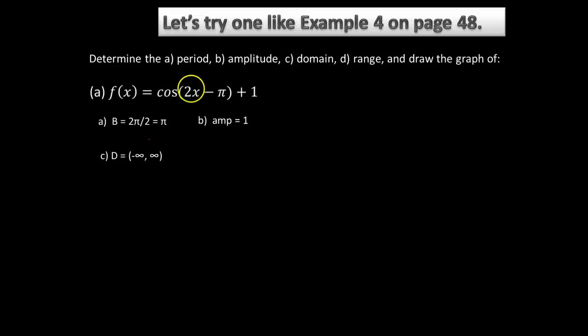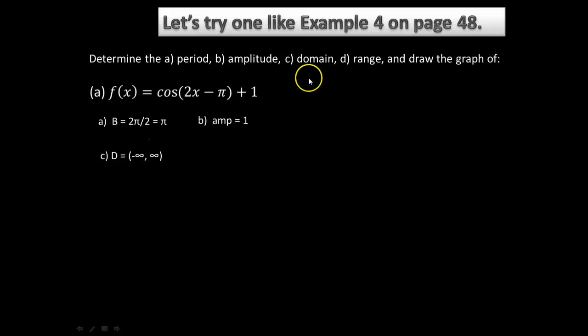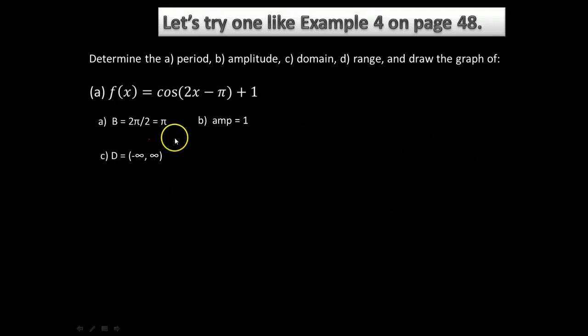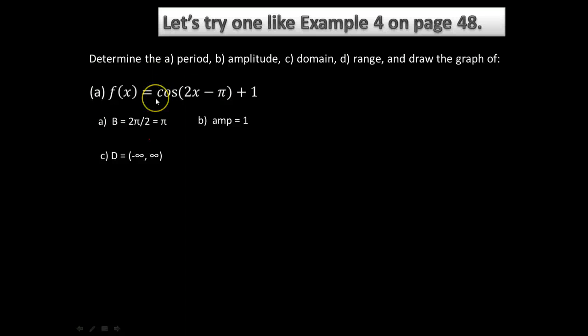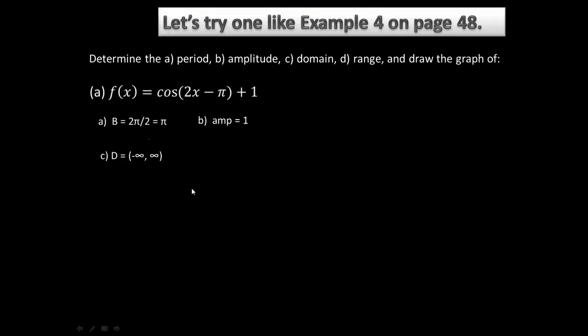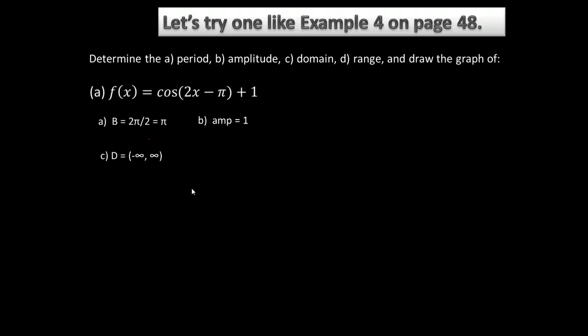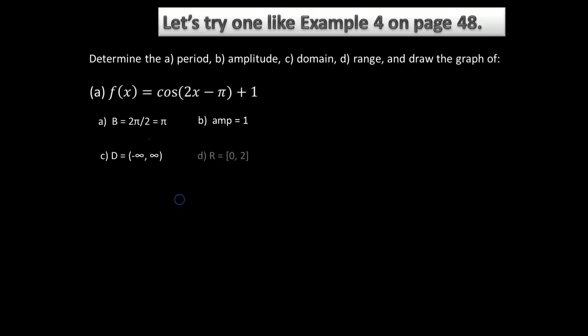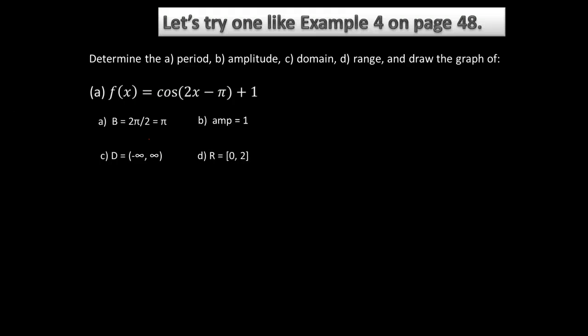D, the range. Well, typically the range is negative 1 to 1, but that can change depending on what you have for an amplitude and if you have a vertical shift. We have an amplitude of 1, so that's not going to affect our range, but we do have this vertical shift of up 1, so instead of ranging from negative 1 to positive 1, we're shifting it up 1, which means it's going to have a range of 0 to 2.